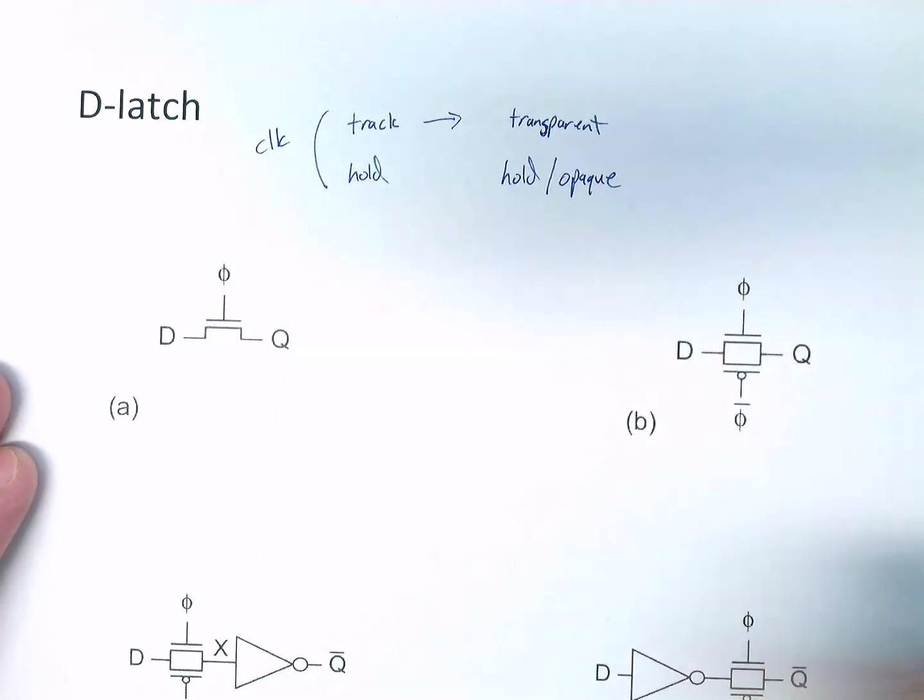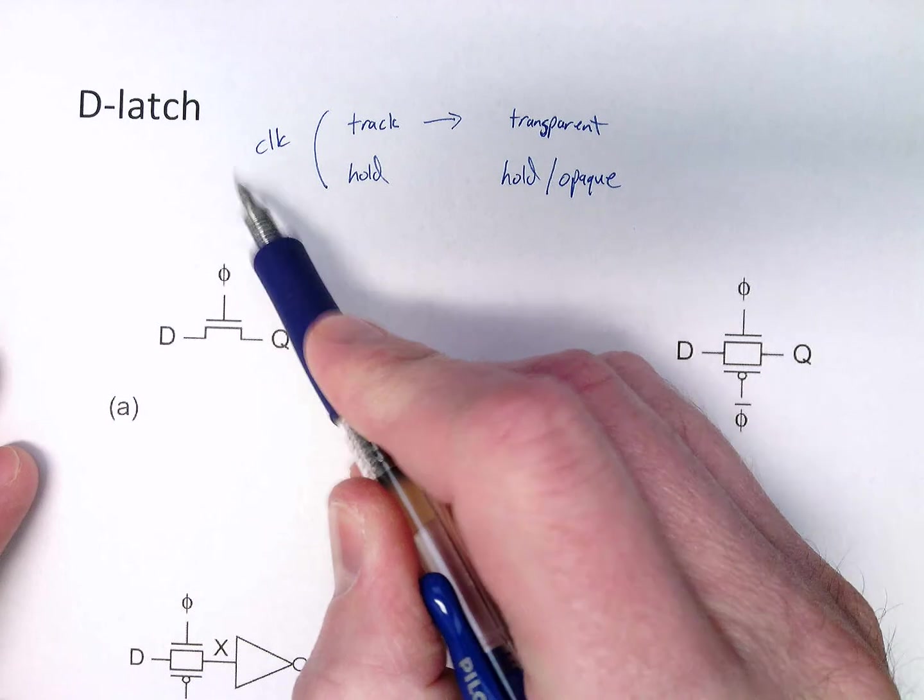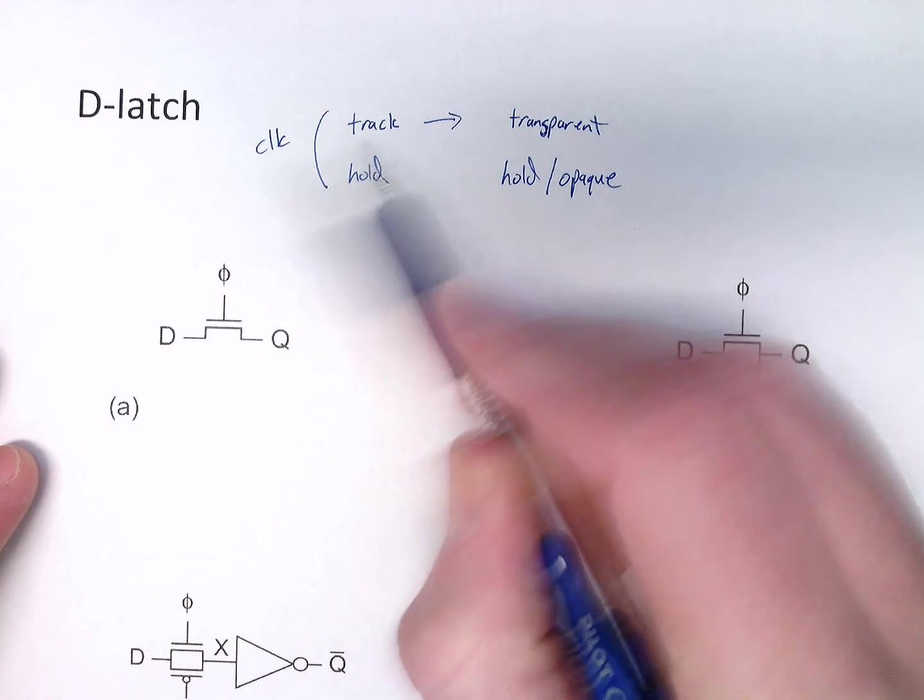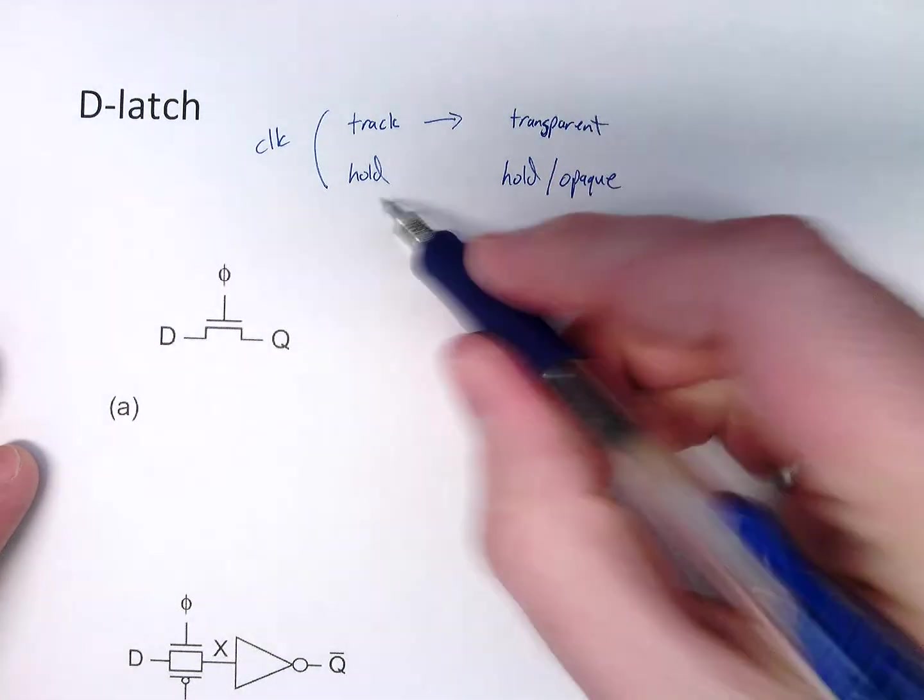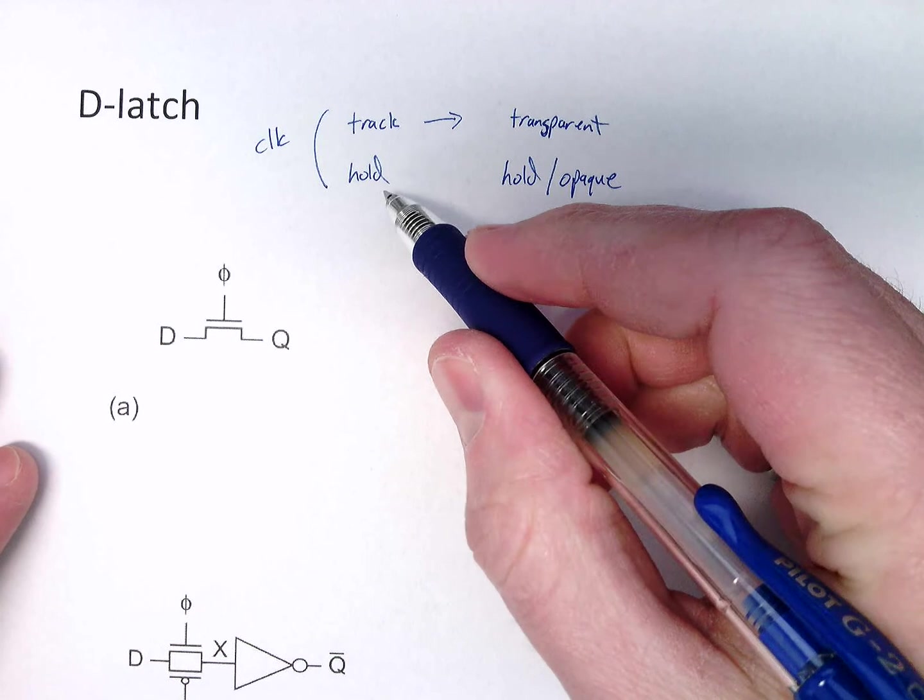So we have a clock, our clock signal sets these states. In tracking mode, the output just goes right through. Hold mode, the state stays the same.